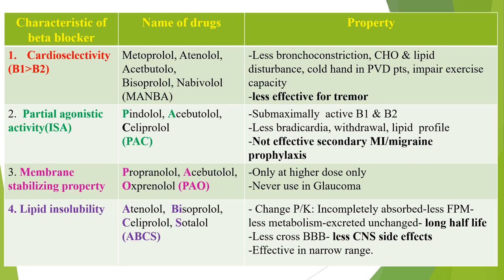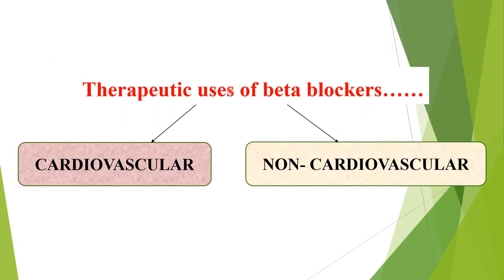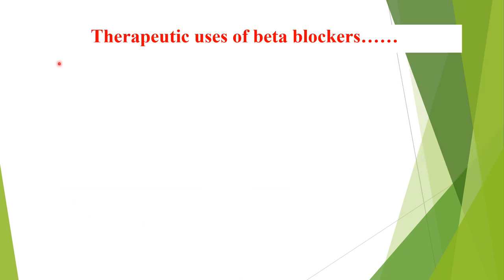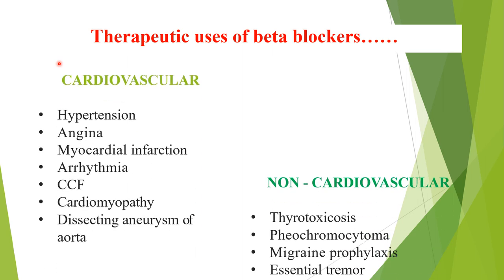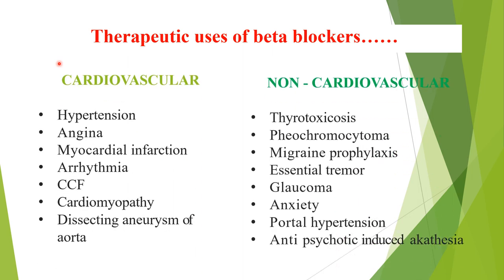Therapeutic uses of beta blockers — cardiovascular: hypertension, angina, myocardial infarction, arrhythmia, congestive heart failure, cardiomyopathy, and dissecting aneurysm of the aorta. Non-cardiovascular uses: thyrotoxicosis, pheochromocytoma, migraine prophylaxis, essential tremor, glaucoma, anxiety, portal hypertension, and antipsychotic-induced akathisia.